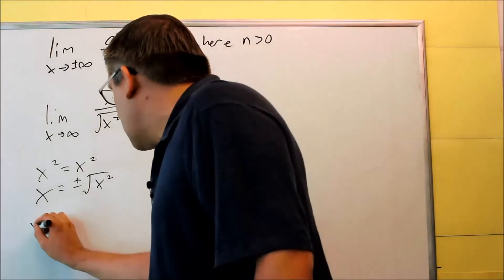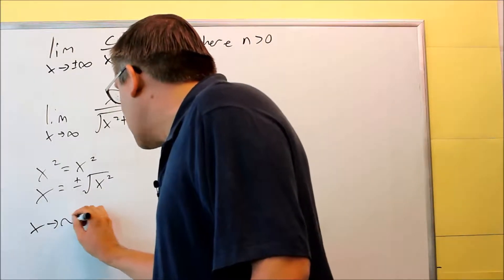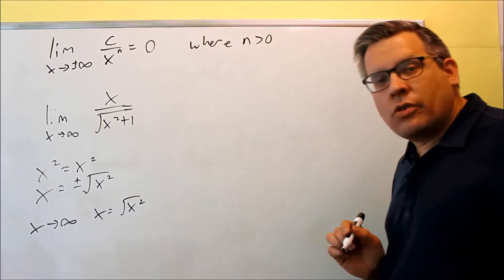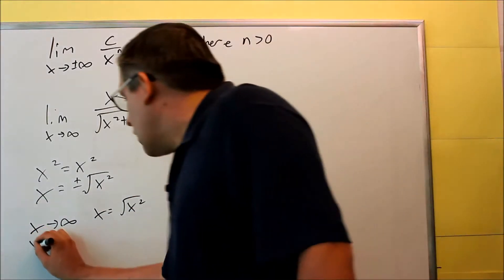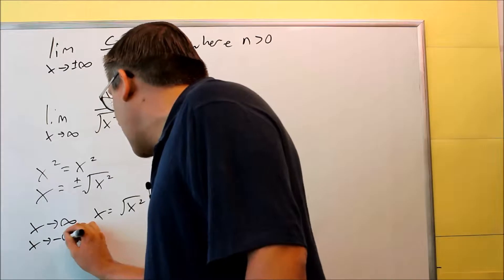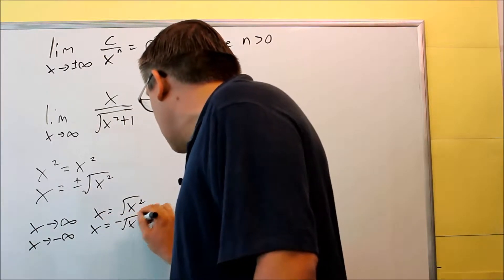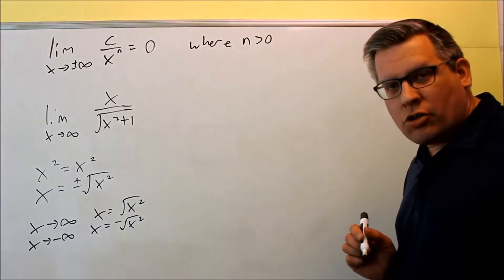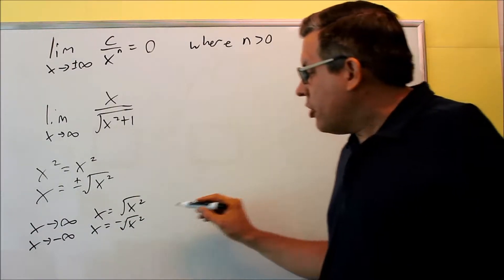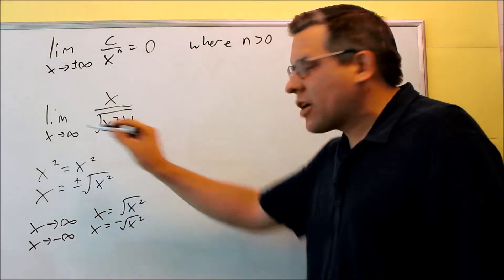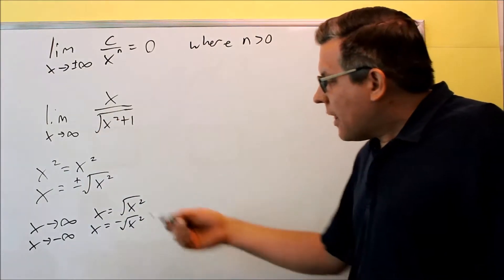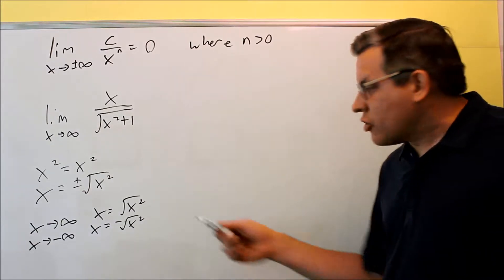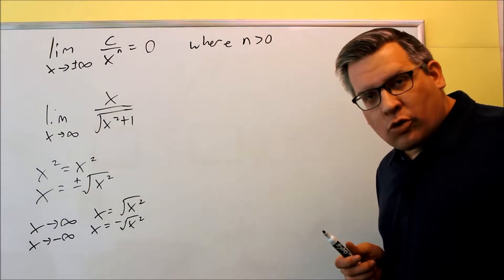If x is going to positive infinity, you're going to use this definition — you're going to say that x is equal to the square root of x squared. If you have x going to negative infinity, then you want to use the other one. So it all depends on the way the problem is written, which definition you're going to use. Since x is going to infinity here, I'm going to use x equal to the square root of x squared — those are both said to be equal to each other.